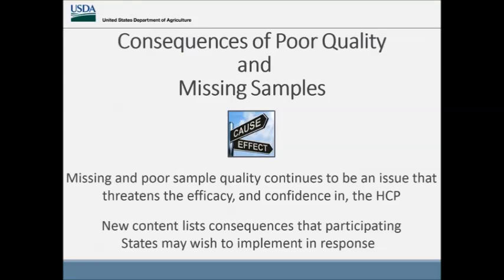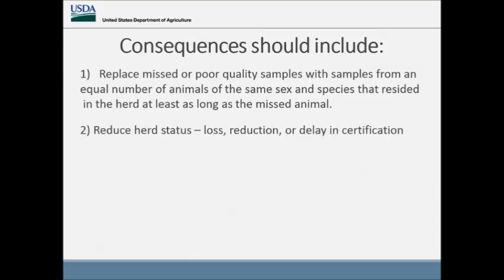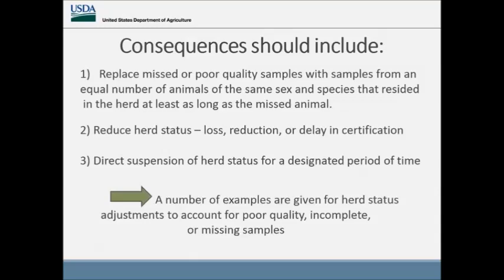Surveillance is the key to increasing our confidence that HCP certified herds are at low risk. Poor samples and missed samples undermine our ability to assess the status of a herd and affect the integrity of our program. Consequences that states may implement include: replacing missed or poor quality samples with samples from an equal number of animals of the same sex and species that resided in the herd at least as long as the missed animal; herd status reduction or delay in certification; or direct suspension of herd status for a designated period of time.